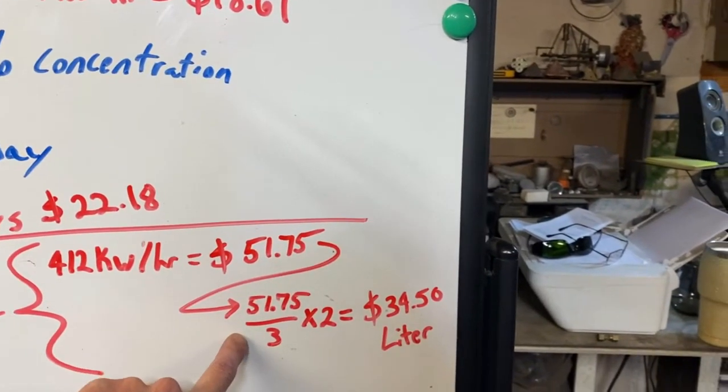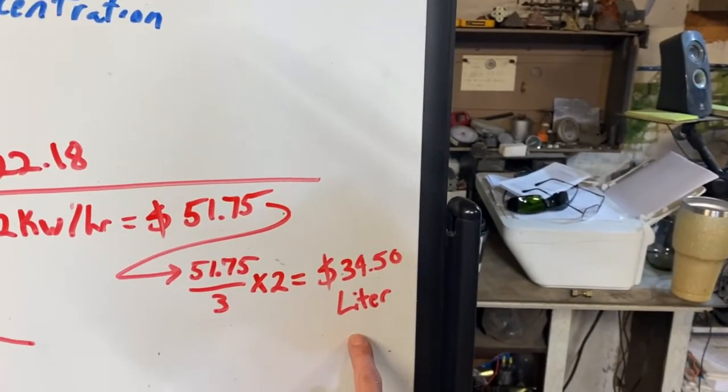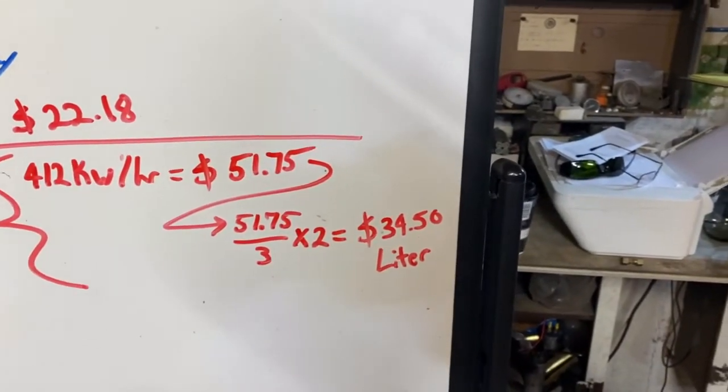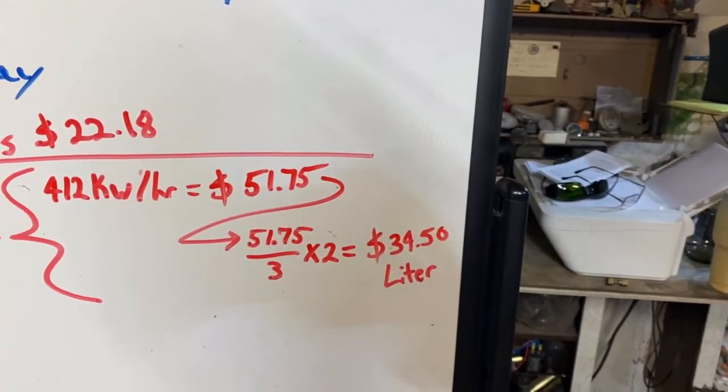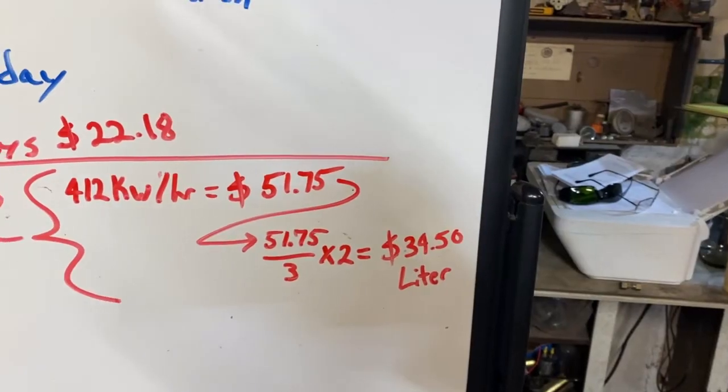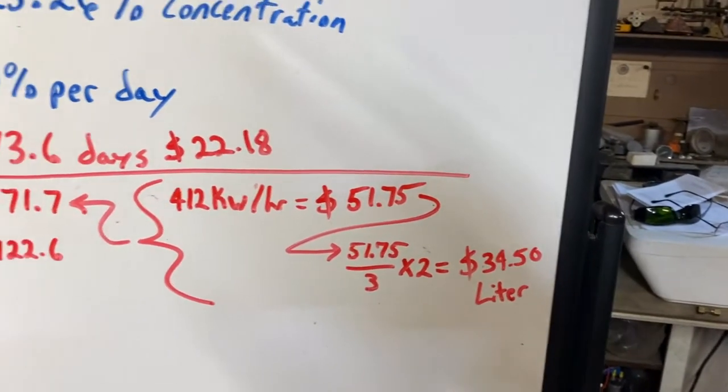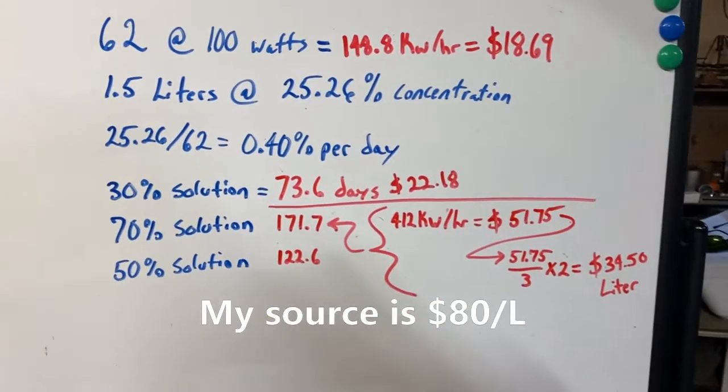we divide that by 3, multiply it by 2, and that gives us the cost per liter, which is $34.50 per liter, which is a little less than half the cost of what they charge you in the store. So, I'm calling that a viable solution for sure.